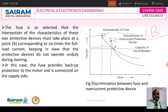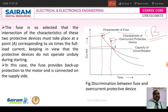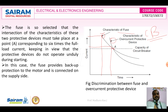The fuse provides backup protection to the motor and is connected on the supply side. Here we have two devices — one fuse and one circuit breaker. The circuit breaker acts as the primary device and the fuse acts as the secondary device. This is about fuse discrimination.